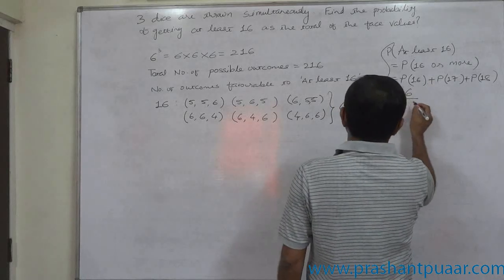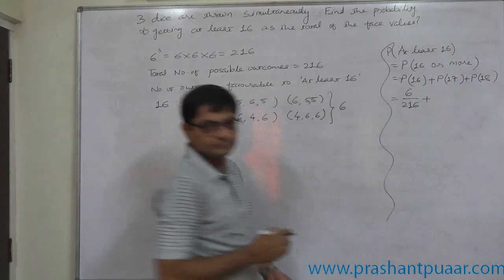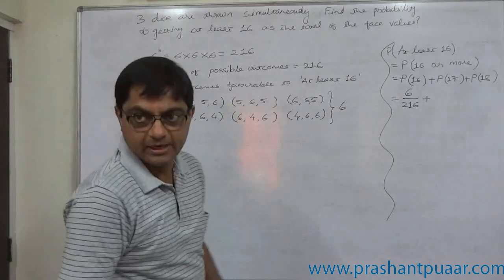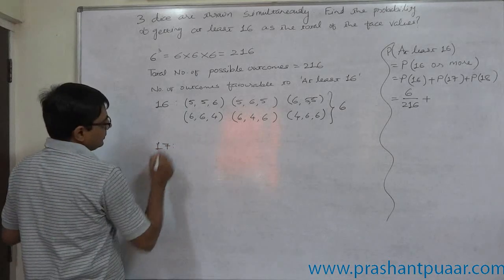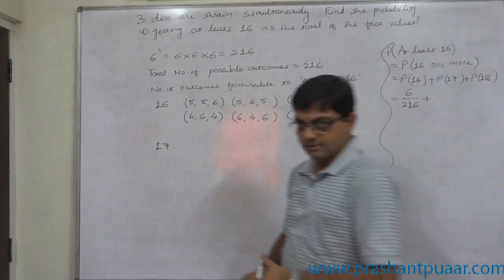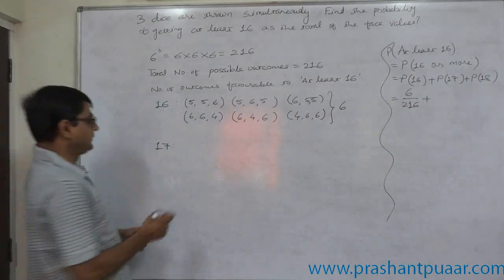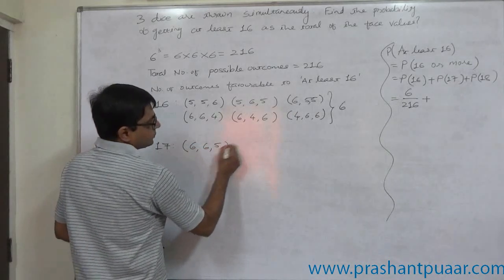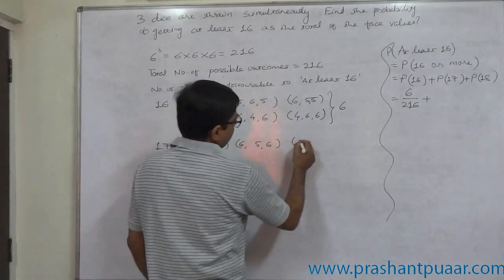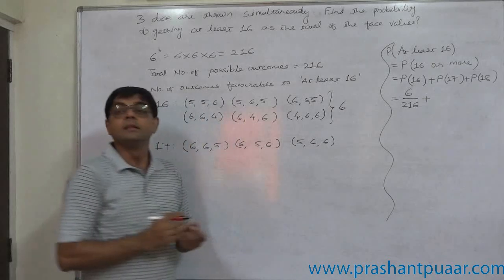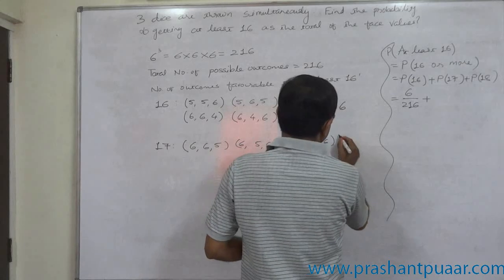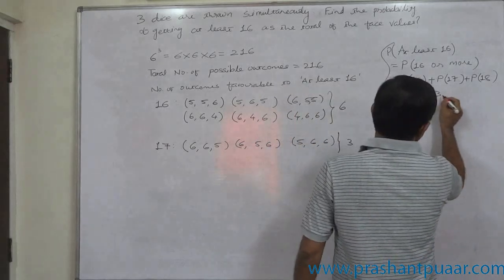Now, favorable cases for 17. In how many ways is a total of 17 possible? 6, 6, 5. Two other possible arrangements: 6, 5, 6 and 5, 6, 6. These are the only three ways in which 17 is possible. Probability of 17 is 3/216.